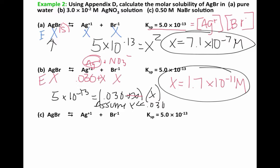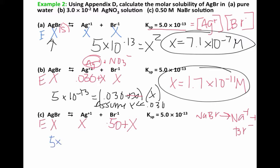For part C, we want to calculate the molar solubility of silver bromide in a 0.50 molar solution of sodium bromide. This is the last row of our ICE table. At equilibrium, we have X moles per liter of silver bromide and X moles per liter of silver plus ions. NaBr completely dissociates into Na+ and Br- ions, so the Br- concentration is 0.50 plus X. Assuming X is much less than 0.5, we have 5 times 10 to the negative 13 equals 0.50X.